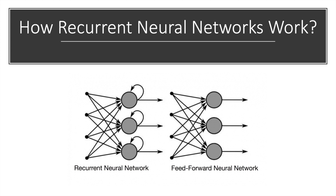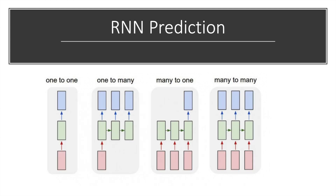A feed-forward neural network assigns a weight matrix to its inputs and then produces the output. Note that RNNs apply weights to both the current and the previous input. Furthermore, a recurrent neural network will also adjust the weights for both through gradient descent and backpropagation through time. Also note that while feed-forward neural networks map one input to one output, RNNs can map many-to-many, many-to-one, one-to-many, and one-to-one. Many-to-many could be translation, and many-to-one could be classifying a voice, for example.